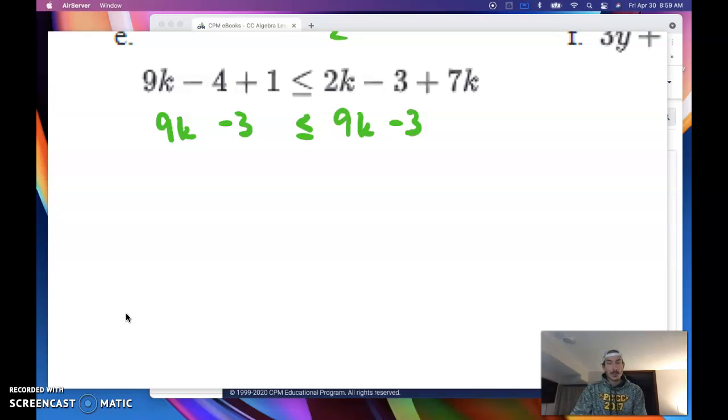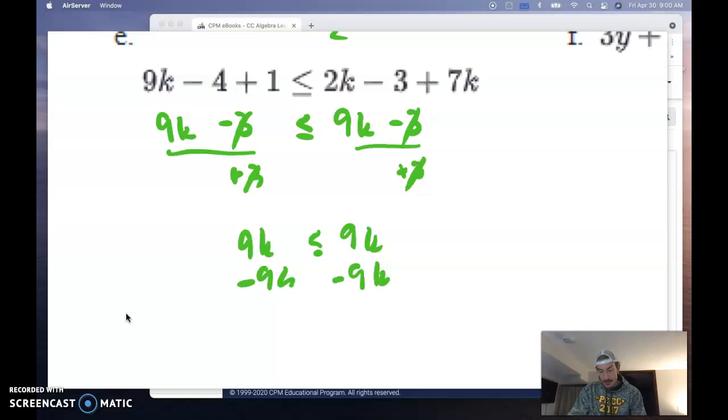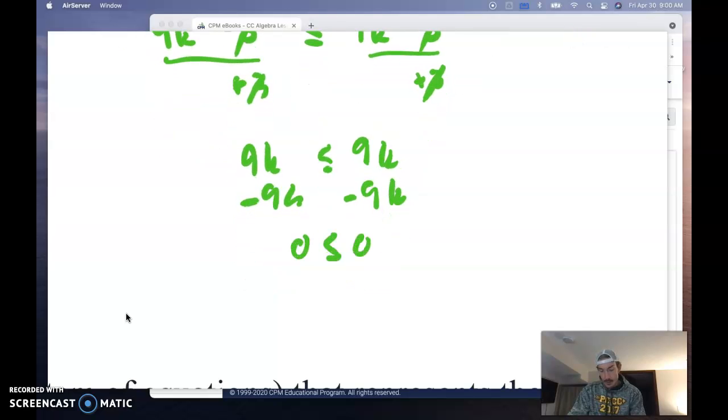Now look at what's happening. I recognize right away what I have over here matches exactly over here. And what that's telling me is that no matter what I plug in for K, it is going to be a solution. You can add 3 to both sides if you wanted. They cancel. And you get 9K is less than or equal to 9K. And then you can subtract 9K from both sides. And they cancel. And you get 0 is less than or equal to 0. That is true. And what that's telling you is no matter what you plugged in for K, you would have any number be a solution. So in this particular case, we say all reals are a solution.